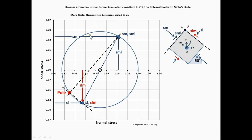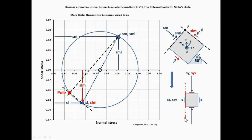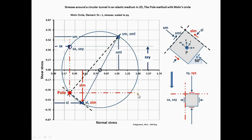To find the stresses acting at the vertical and horizontal planes of this element, draw parallel lines to the element's planes through the pole. The line parallel to the vertical plane intersects Mohr's circle at the coordinates normal stress S-Y and shear stress S-Y-X.